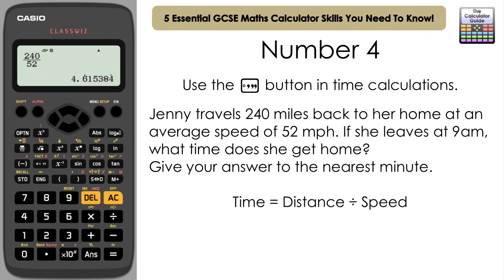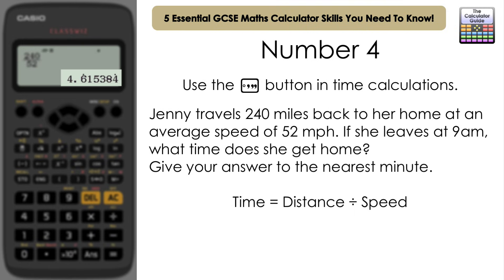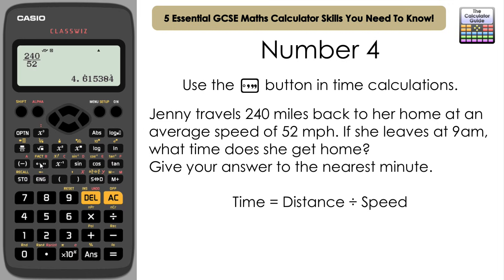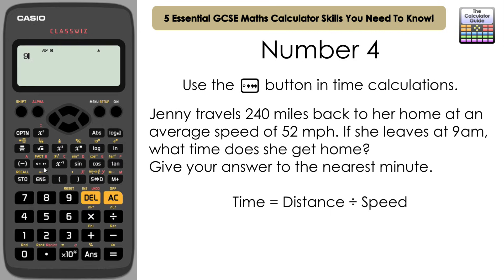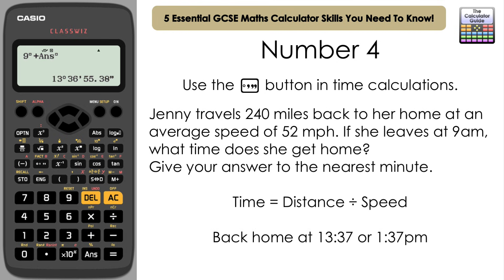The result is our time in hours, but 4.615384 recurring is hard to interpret directly. Using the degrees, minutes, and seconds button: input 9 (her start time in hours), press that button, then add our answer in hours, and press equals. The calculator shows she arrives at 13:36 and 55.38 seconds. Rounded to the nearest minute, that's 13:37, or 1:37pm.